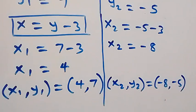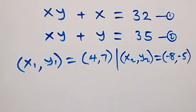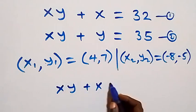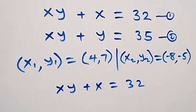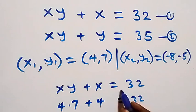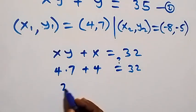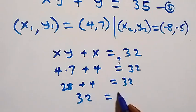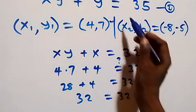We can check to confirm. Substituting (4, 7) into equation one — xy plus x equals 32 — we get four times seven plus four equals 32. That is 28 plus four equals 32, which is indeed 32. Left hand side equals right hand side, so this satisfies equation one.